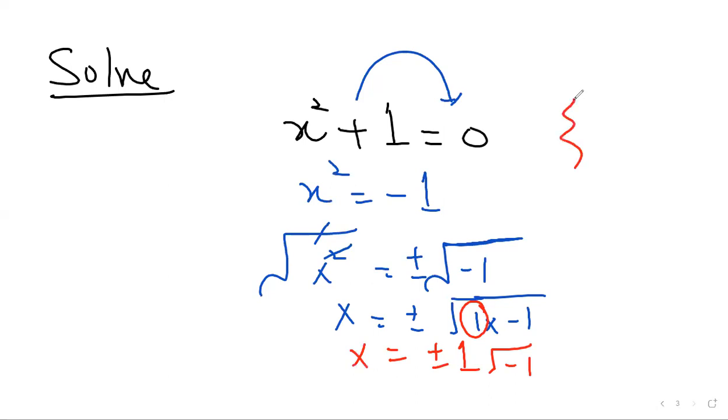Then the solution will be like plus minus will remain with it and the iota: minus iota and plus iota.